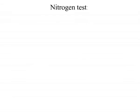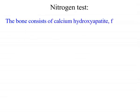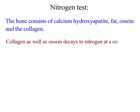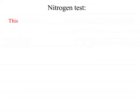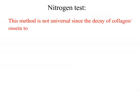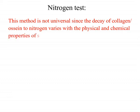The third relative dating technique is the nitrogen test. The bone consists of calcium hydroxyapatite, fat, ossein protein, and collagen. The collagen as well as ossein decays to nitrogen at a constant rate over time, thus enabling estimation of the time of deposition. This method is not universal since the decay of collagen or ossein to nitrogen varies with the physical as well as chemical properties of the soil in which the bone is found.